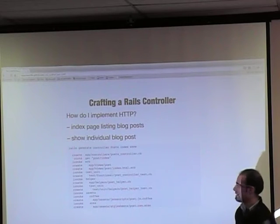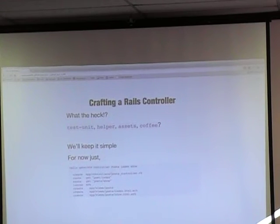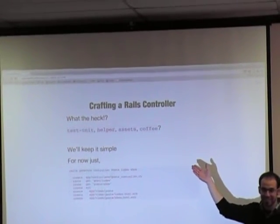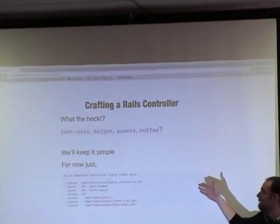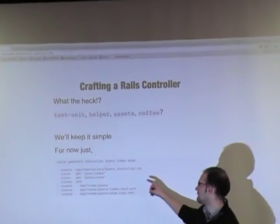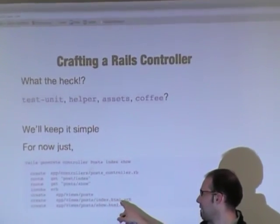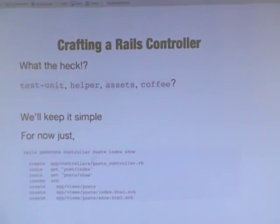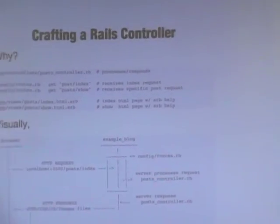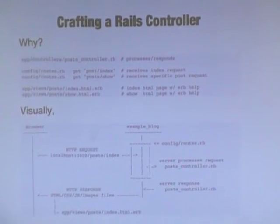These are all the files that are generated — some of them are important, some of them are not. There are test unit files, helper files, assets — what the heck? This is where most people quit Rails, right? You're like, this is too much, I just want to write HTML. We're just going to keep it simple and only look at the controller, the routes config file, and the weird HTML.erb files — Embedded Ruby files.